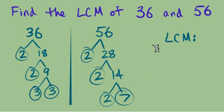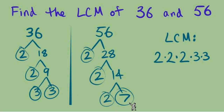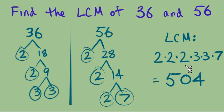Now let's build the LCM. We have to use all factors — 2s, 3s, and 7s must all appear. Where do we see the most 2s? The tree for 36 has two 2s, and the tree for 56 has three 2s — so we use three 2s. For 3s: the tree for 36 has two 3s and the tree for 56 has none, so we use two 3s. For 7: one 7 in the tree for 56 and none in 36, so we use one 7. Multiplying 2 times 2 times 2 times 3 times 3 times 7 gives us 504, which is the LCM of 36 and 56.